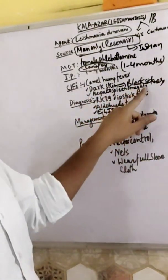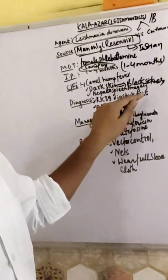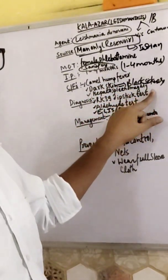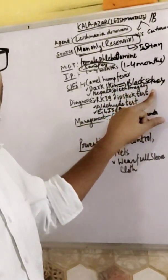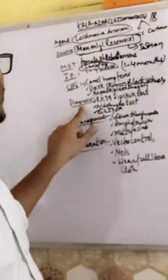Hepatosplenomegaly occurs - the spleen and liver become enlarged when a person is infected with Kala-azar.